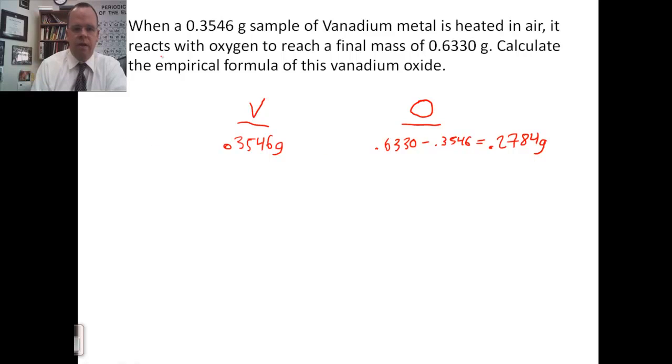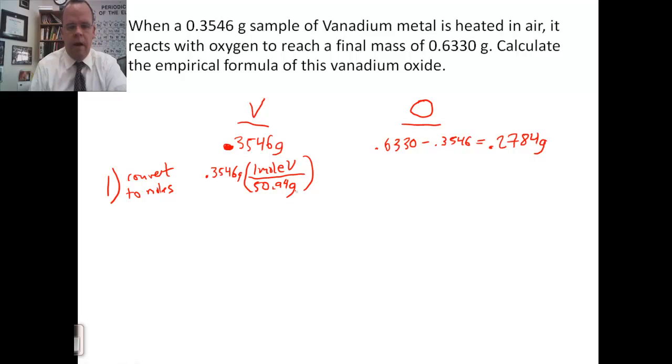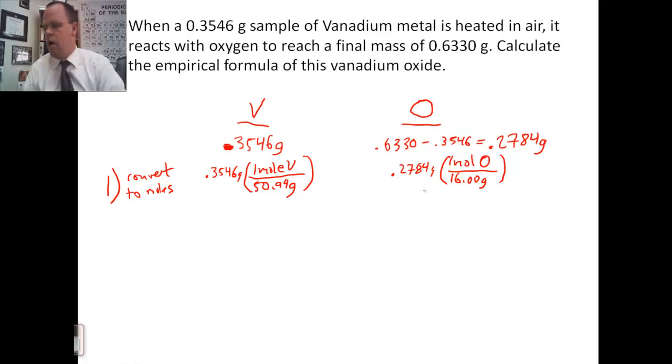So, take the percent composition, or the data that you have, and get the grams of each element. First step, convert to moles. So, from grams, I'm going to use the molar mass to convert to moles. One mole vanadium. Vanadium has a molar mass of 50.94 grams. For oxygen, 0.2784 grams. One mole oxygen, 16 grams.